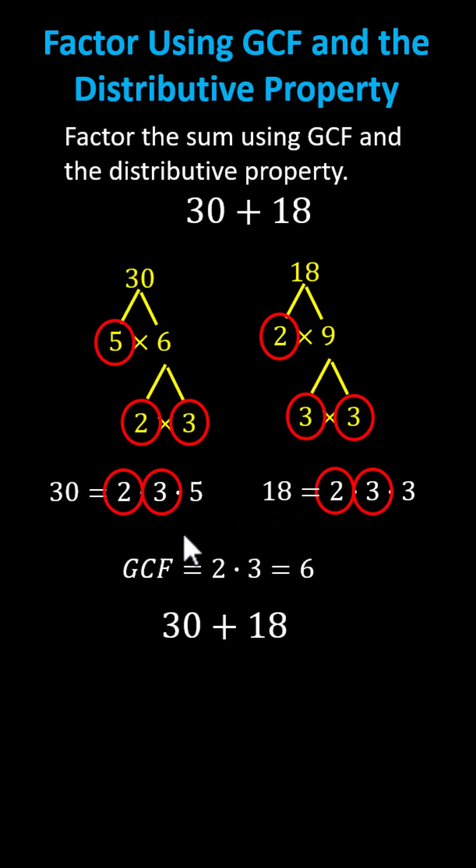Now going back to the sum, using the greatest common factor of six, let's write 30 as six times five and 18 as six times three. Now we'll factor out the six and factor the sum using the distributive property. Notice if we factor out six, we're left with the sum of five plus three, indicating 30 plus 18 is equal to six times the sum of five and three.